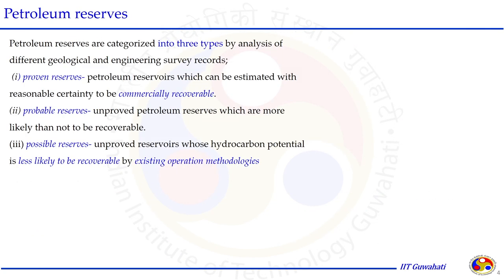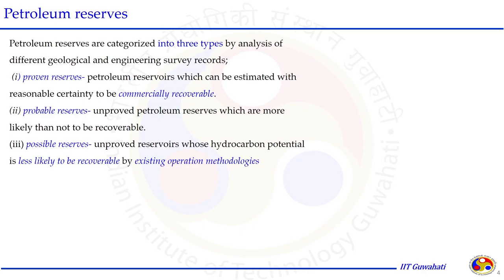Overall, petroleum reservoirs can be classified into three parts: proven reservoir, probable reservoir, and possible reservoir. Proven reservoirs are those producing at economic conditions — they have been identified, drilled, production has started, and they are producing at a high flow rate with commercially recoverable hydrocarbon fluid. Probable reservoirs are unproved petroleum reservoirs having hydrocarbon fluid that can be recovered — more likely than not to be recoverable. Possible reservoirs are geological sites having hydrocarbon fluid but not likely to be recoverable with existing operating methodology.